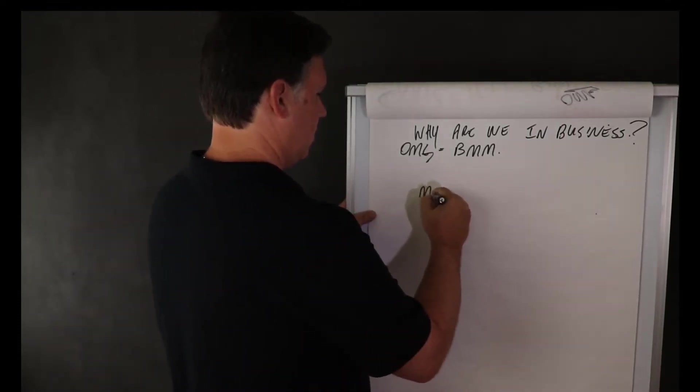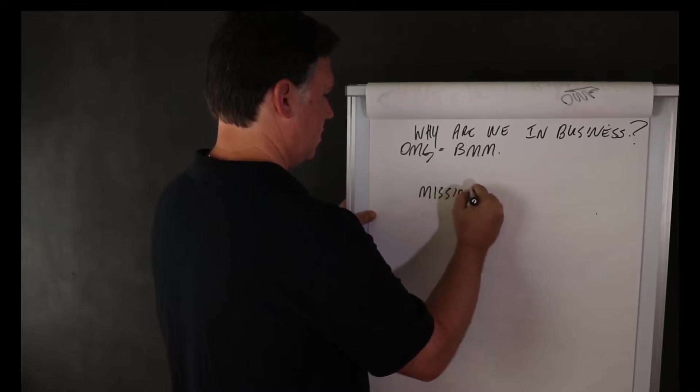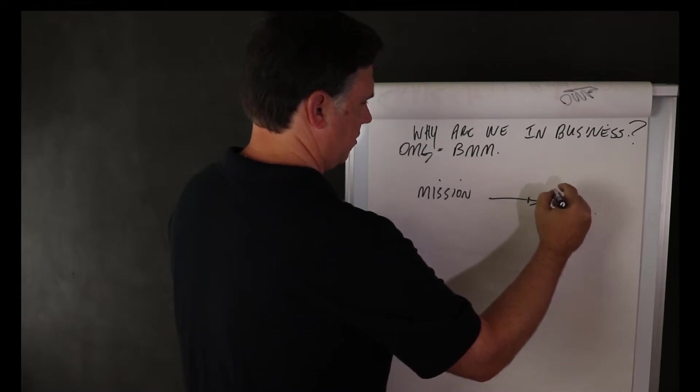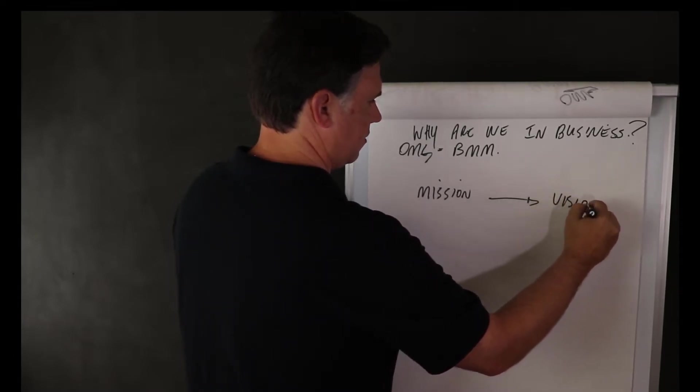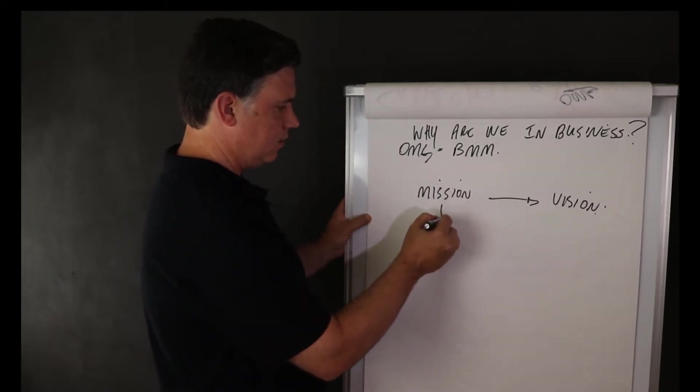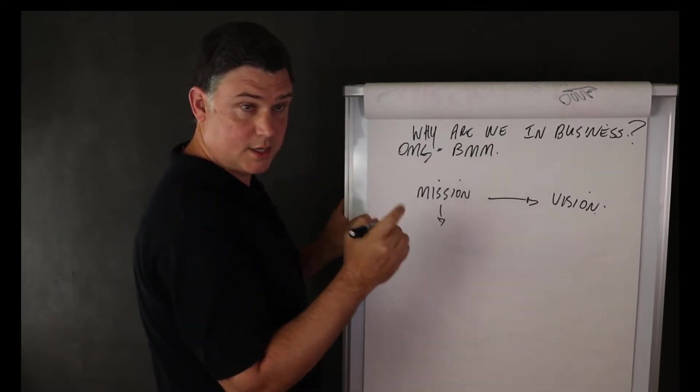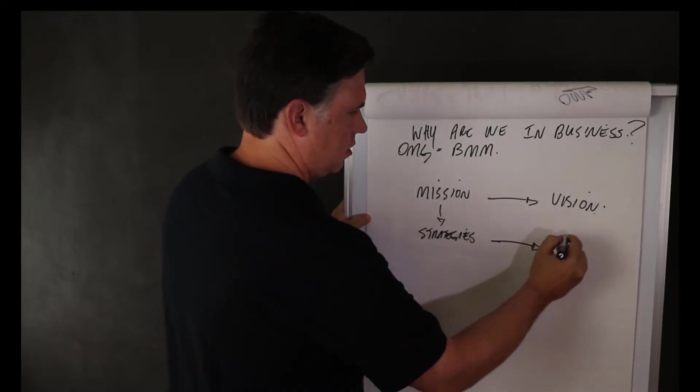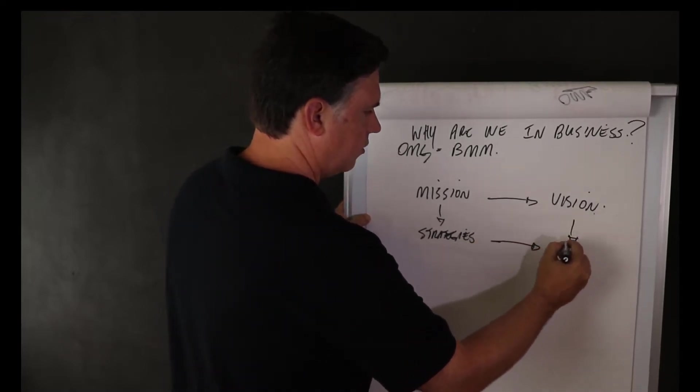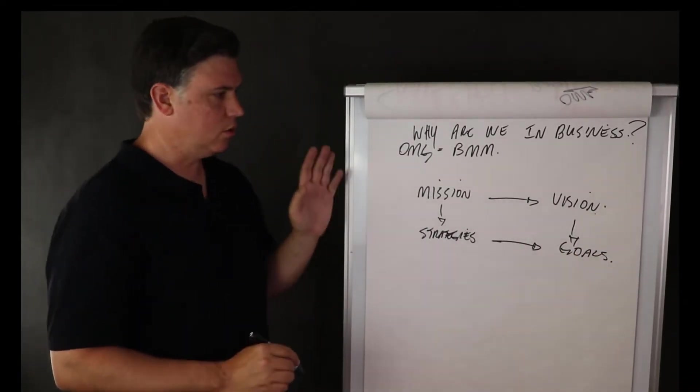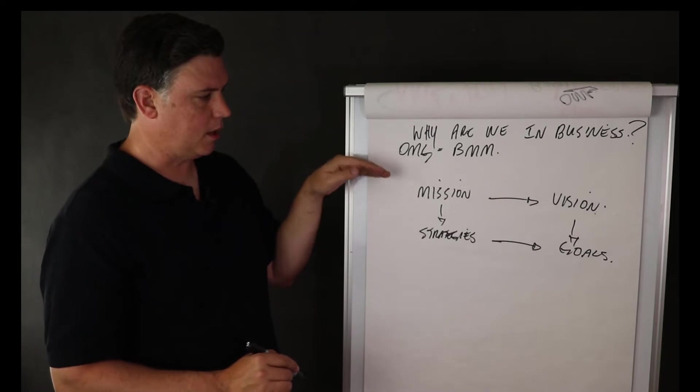We start with the business mission. That leads to an effect, which is the business vision - mission, vision. And then they break down into strategies, which then break down into or lead to goals. See how that works? Cause and effect, and we're breaking them down conceptually, logically, and then physically.